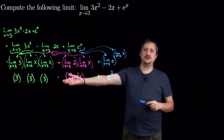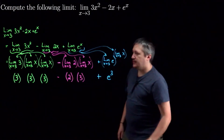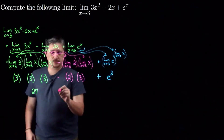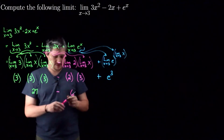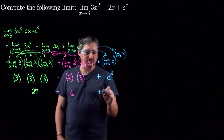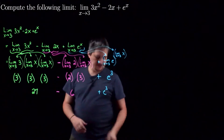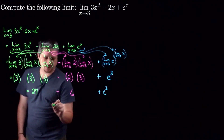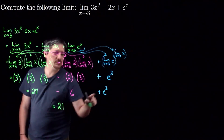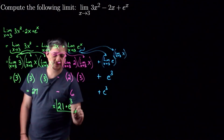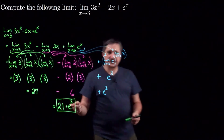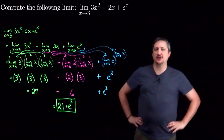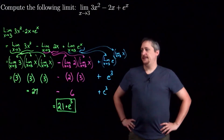Now that I've done all this, all I have left is to simplify. Here I get 27, because 3 times 3 times 3 is 27, minus 2 times 3 which is 6, and then e cubed stays as e cubed — there's nothing you can do with that. So all said and done, 27 minus 6 is 21, plus e cubed — and that's my answer. It's very commonplace to have irrational constants just left as they are; there's no expectation to plug them into a calculator for a decimal approximation.